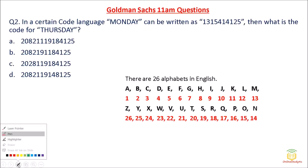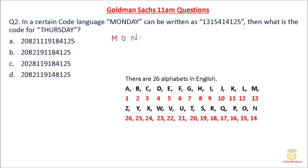Question number 2 is again a coding-decoding problem from reasoning. In a certain code language, 'Monday' is written as 13 15 14 4 1 25 — wait, let me re-read: it is written as 1 3 1 3 1 5 4 1 4 and then 25.